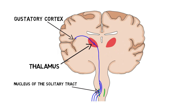The gustatory cortex allows us to consciously discriminate different taste stimuli. The taste information sent along these pathways is thought to encode for basic tastes, such as sweet, salty, sour, bitter, and savory or umami.